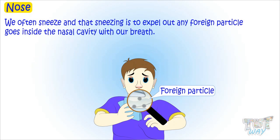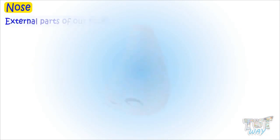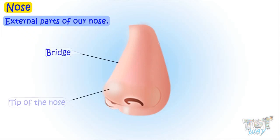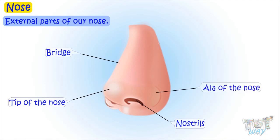Now let's learn the external parts of our nose. This is called a bridge, and this is the tip of the nose. These are nostrils. This portion is called the ala of the nose, and this is called the columella.